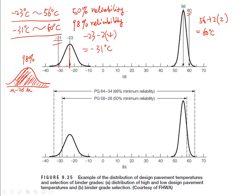This is because for the maximum temperatures throughout the year, the chance of exceeding 60 degrees Celsius is only about 2 percent. And the chance of the minimum temperature falling below negative 31 degrees Celsius is also only about 2 percent. That is why this binder has a 98 percent reliability level.